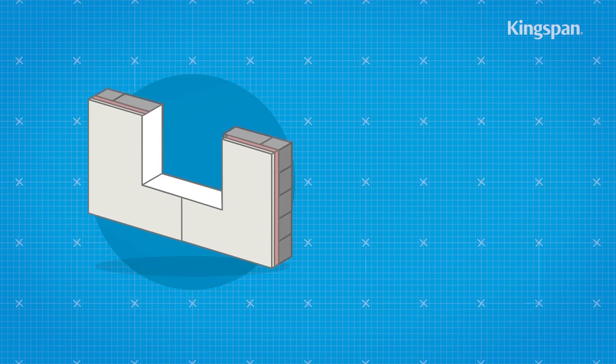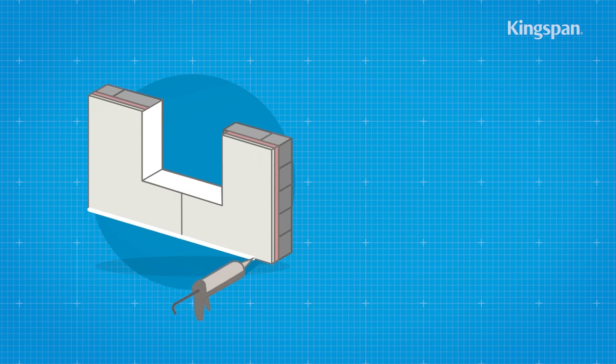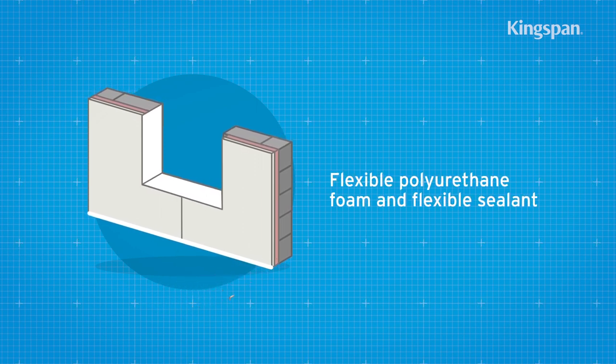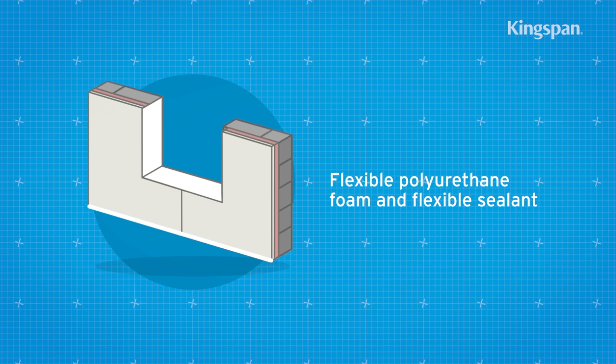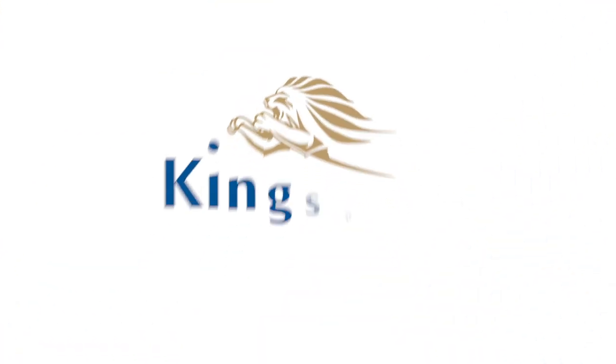To finish, the 15 mm clearance gap at the base of the wall should be sealed with a combination of flexible polyurethane foam and flexible sealant or equivalent.